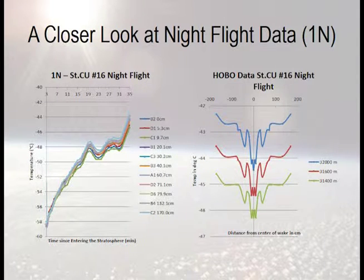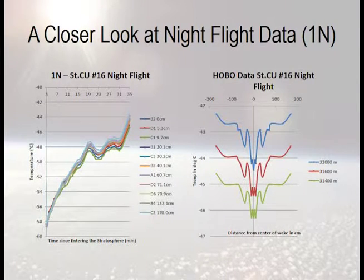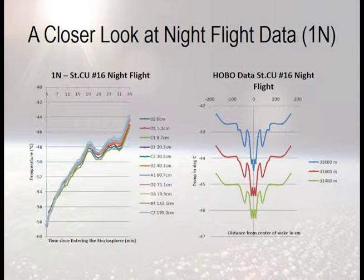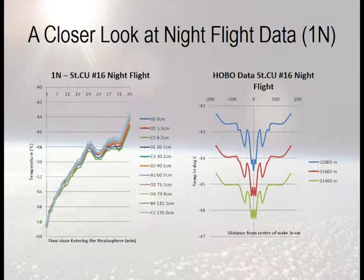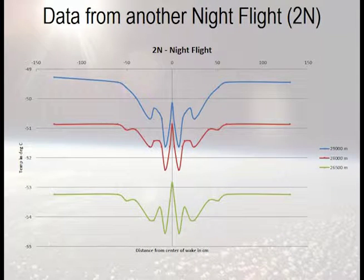One might ask whether that's within the margin of error. I would argue we're still seeing something. The profile is a bit interesting — not nice and uniform, not a Gaussian distribution. Showing data from another night flight: the central sensors, for whatever reason — I have some ideas and would be interested in feedback — were showing some hot sensors in the central region, going warm, then cold, then back to ambient at different altitudes.